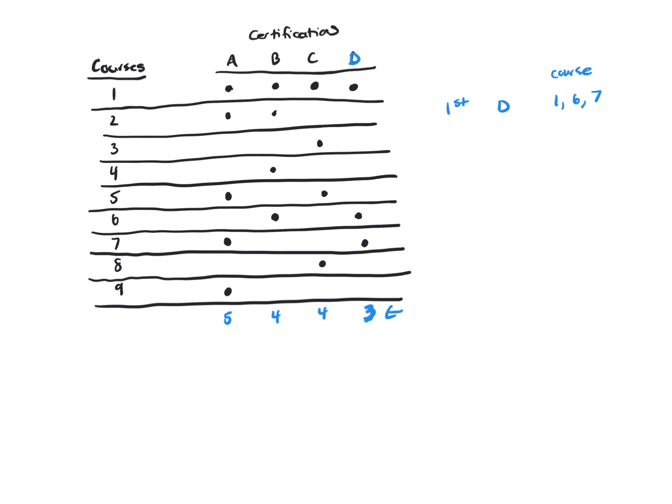And then C, you need one, two, three, four, and four for B, and five for A.